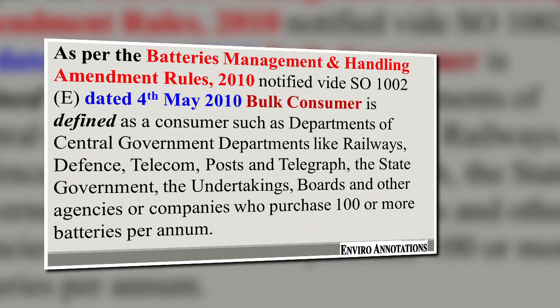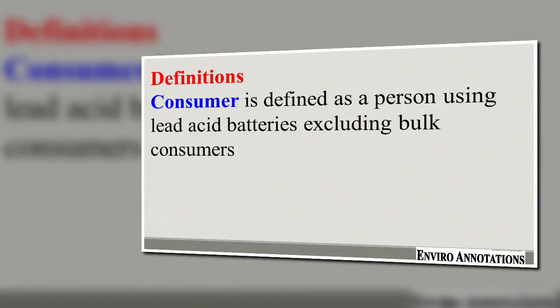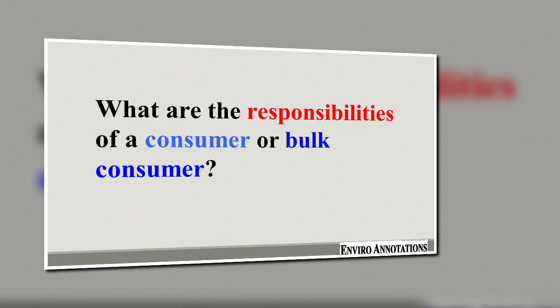As per the Batteries Management and Handling Amendment Rules 2010, notified by SO 1002E dated 4th of May 2010, bulk consumer is defined as a consumer such as departments of the central government — like railways, defense, telecom, posts and telegraph — state government undertakings, bodies, other agencies, or companies who purchase 100 or more batteries per annum. Consumer is defined as a person using lead acid batteries, excluding bulk consumers.